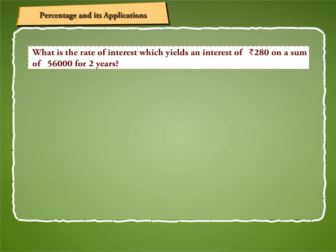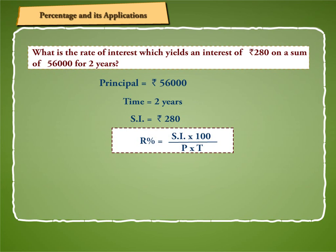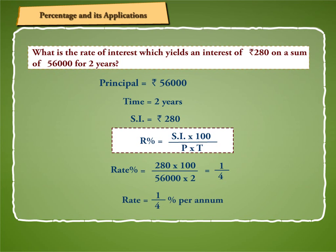Let us take an example to understand the use of the other formulae more clearly. Let us find the rate of interest which yields an interest of Rs. 280 on a sum of Rs. 56,000 for 2 years. Here we have principal = Rs. 56,000, time = 2 years, SI = Rs. 280. By using the formula R% = SI × 100 / (P × T), we get rate percent = 280 × 100 / (56,000 × 2) = 1/4. Hence, rate is 1/4% per annum.